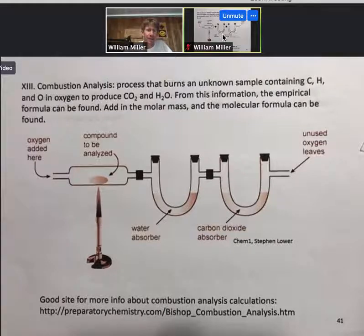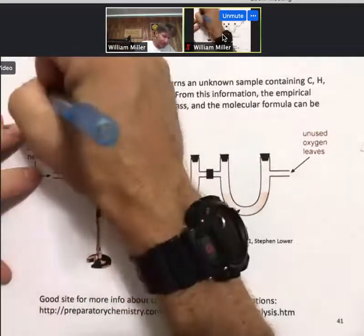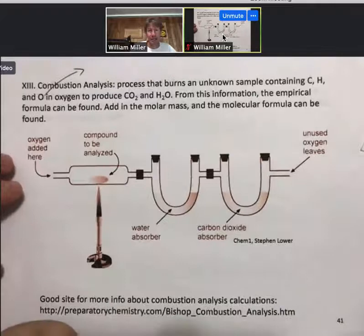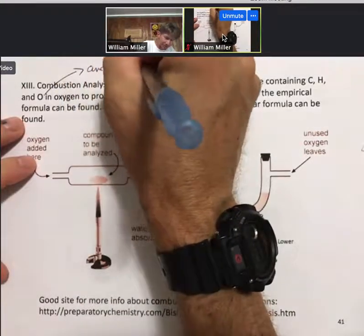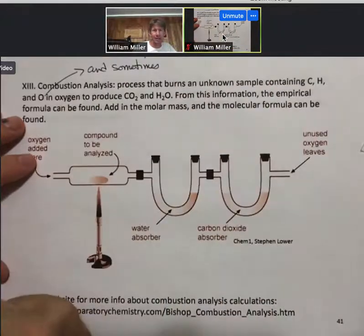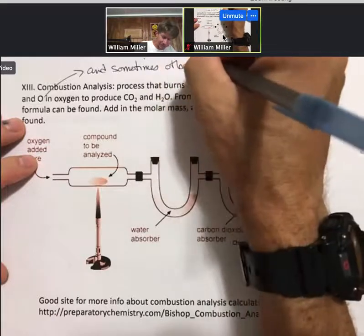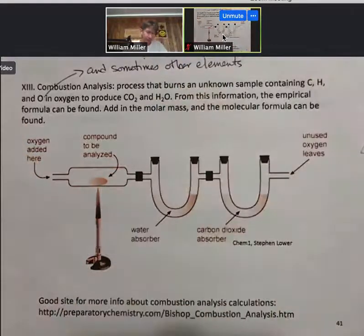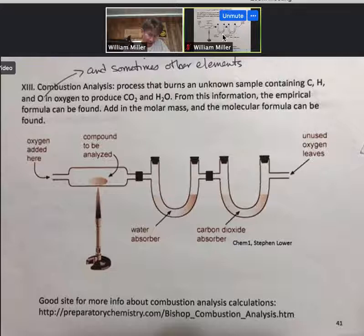And combustion analysis is a process that burns an unknown sample containing carbon, hydrogen, and oxygen, and sometimes other elements, in oxygen to produce carbon dioxide and H2O. From this information, the empirical formula can be found. Add in the molar mass and the molecular formula can be found.